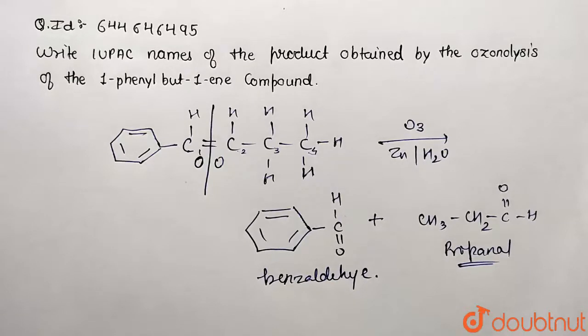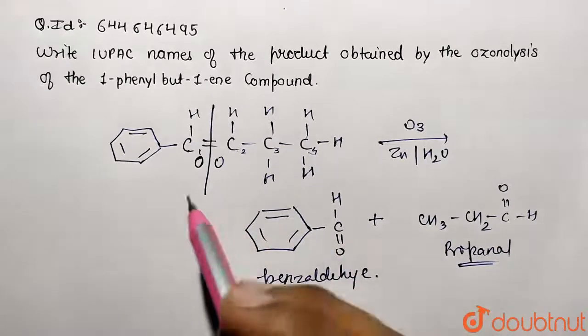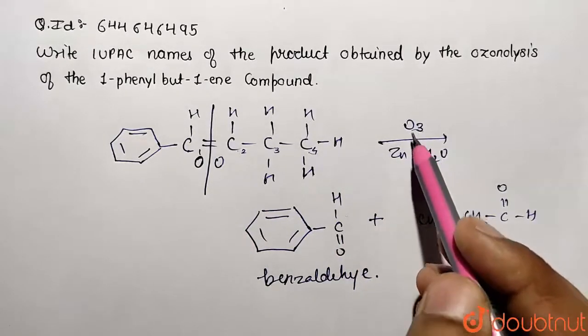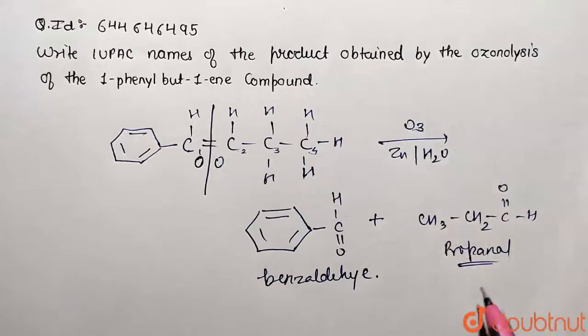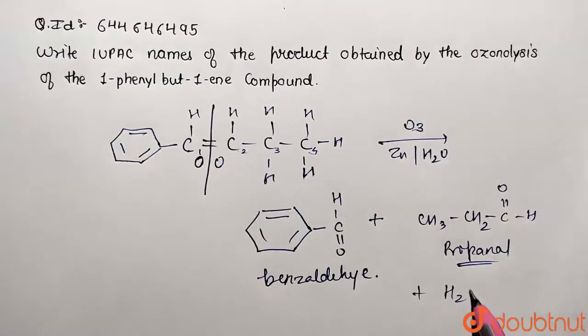Ozonolysis reaction performed on given compound. And what will be the product additionally obtained? Because ozone is O3 molecule and one molecule of O is coming out like this, it's going to form H2O2 as the side product.